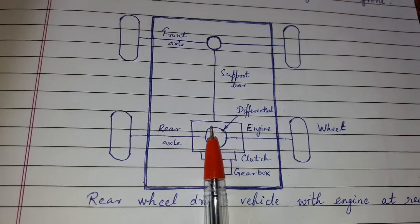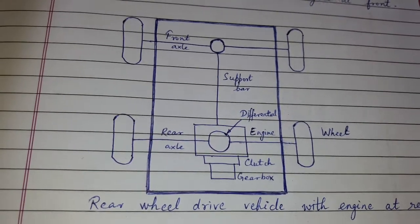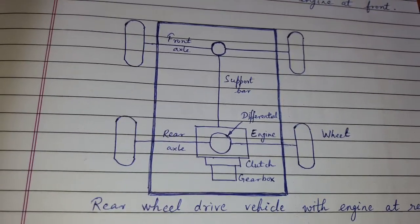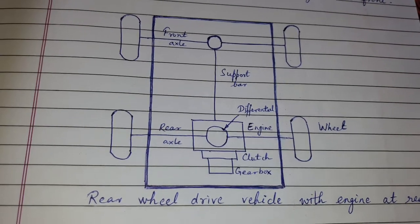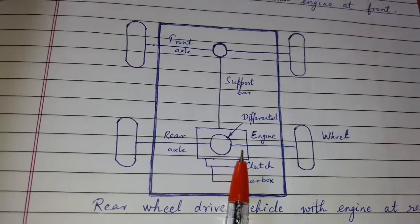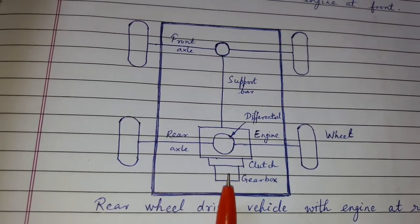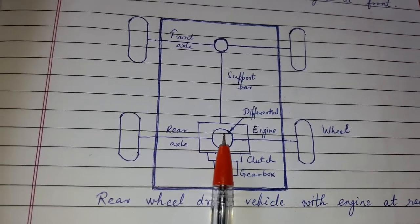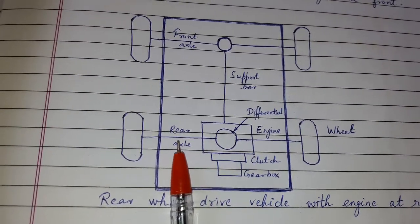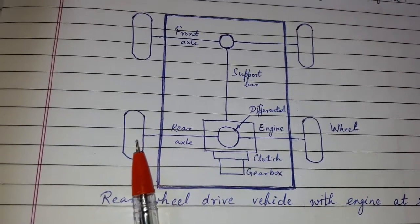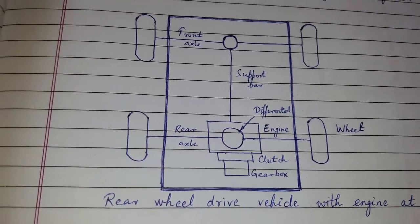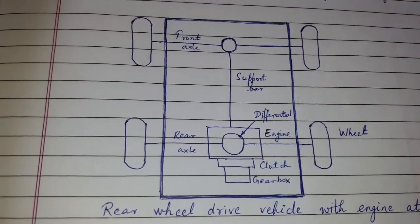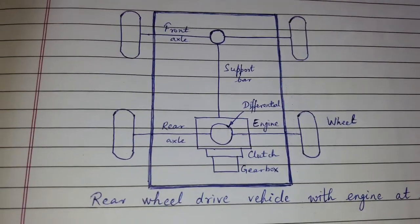The drive is given to the rear wheel. The drive chain is as follows: engine, clutch, gearbox, differential, universal joint, rear axle, wheel. An example of a rear wheel drive vehicle with engine at rear is the Tata Nano.